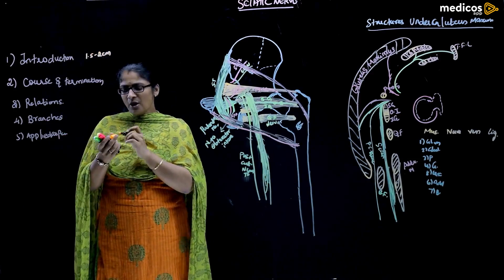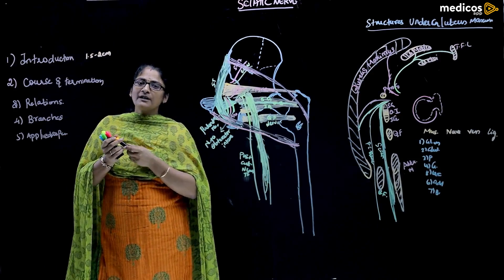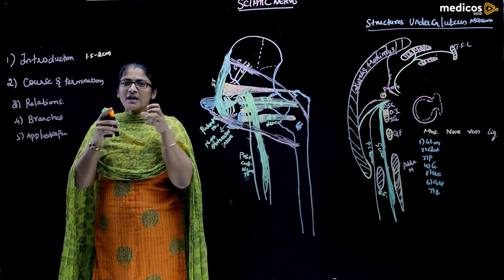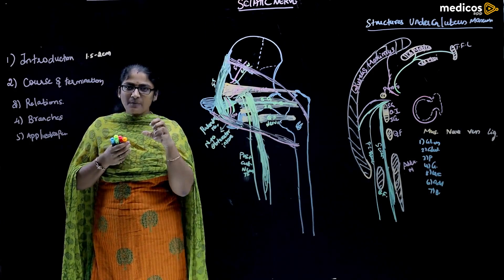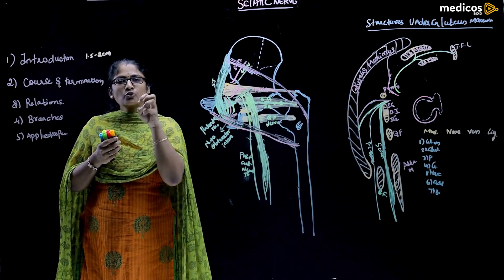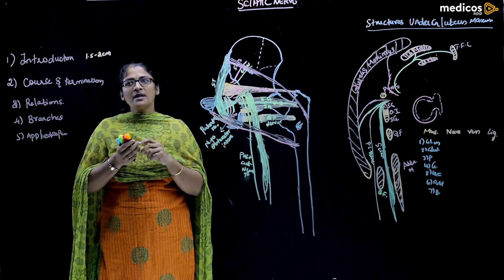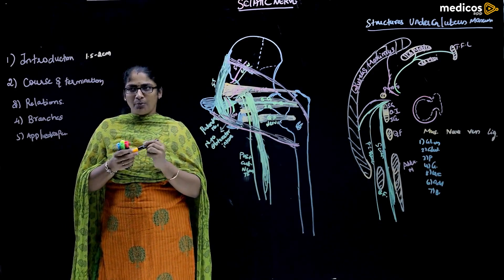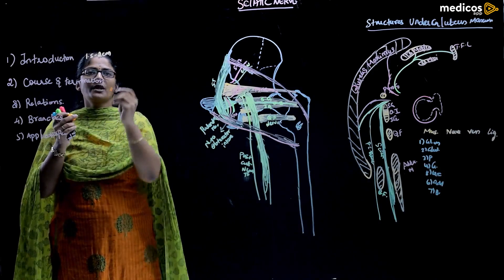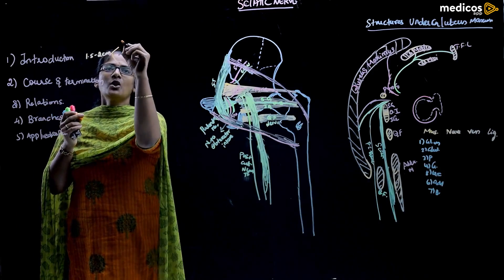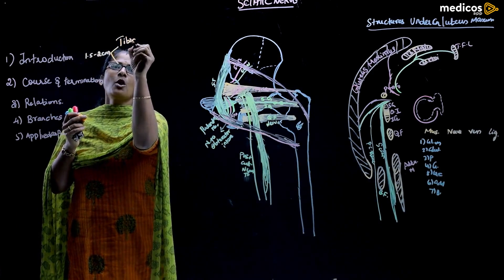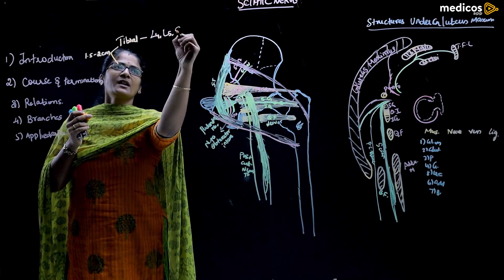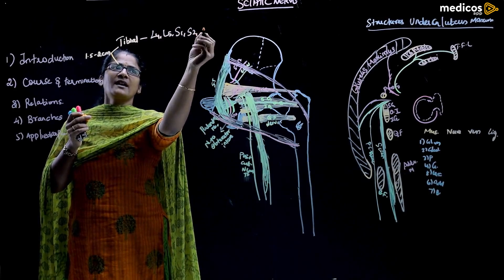It is that thick a nerve, and it is mainly formed by two components. It is derived from the sacral plexus and has two components. The tibial component has root value L4, L5, S1, S2, S3.